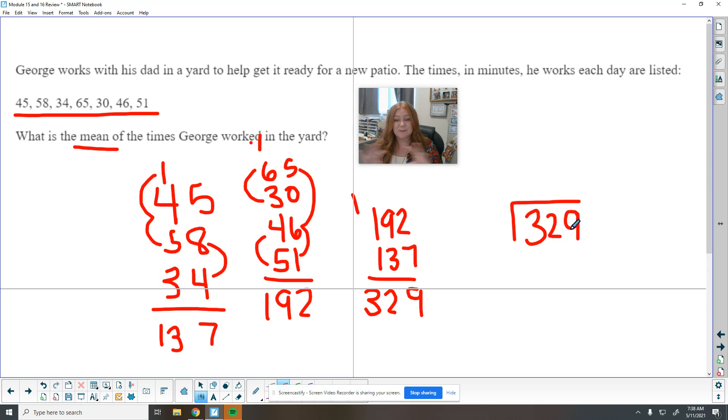So all of the minutes he spent was 329 helping his dad. So if he took those and kind of spread them out equally he would have helped his dad the same amount each day. So he helped his dad one, two, three, four, five, six, seven days. So go ahead and do 329 divided by seven. And that will give you the average amount of time he helped his dad work in the yard.